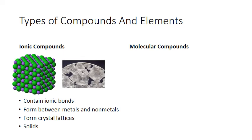Ionic compounds, which are formed between metals and non-metals, tend to form large crystal lattices and they are all solids — crystalline solids to be more specific. This is a molecular representation of a crystal of table salt, which is sodium chloride, the ionic compound NaCl. It's made up of sodium ions, which are positively charged, and negatively charged chloride ions. The formation of that compound is simply the electrostatic attraction between the positive and the negative charges.